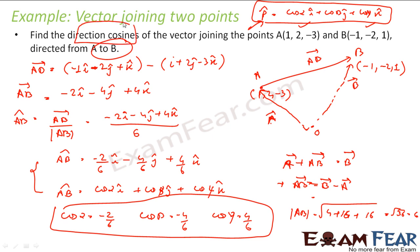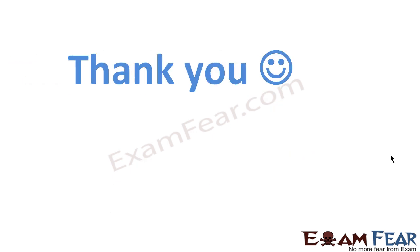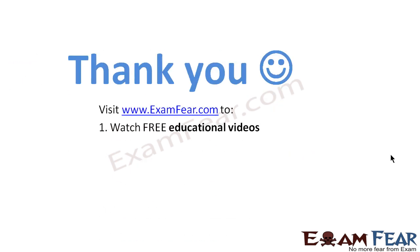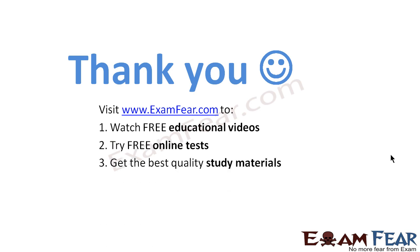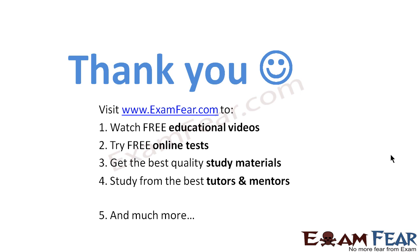So, with this example, we found vector AB by computing vector B minus vector A, then found the unit vector of AB to obtain the direction cosines. Visit examfear.com to watch free educational videos, try free online tests, get the best quality study materials, and study from the best tutors and mentors. Thanks once again.